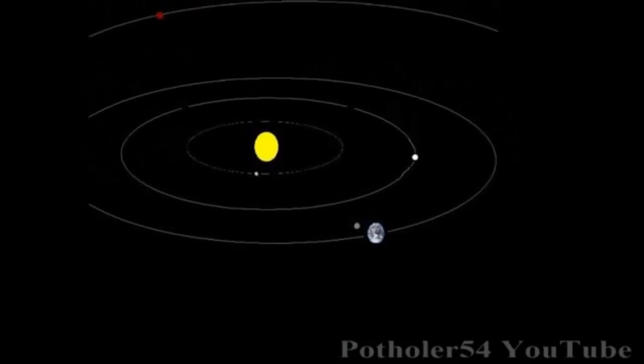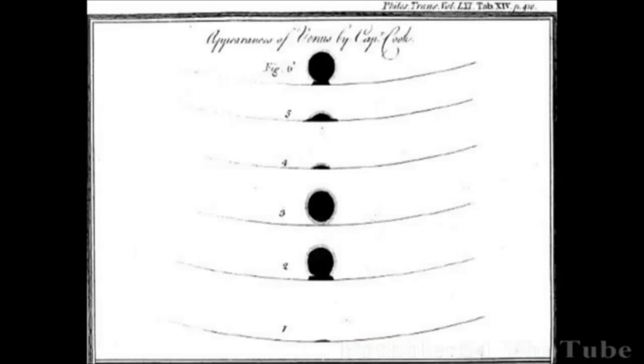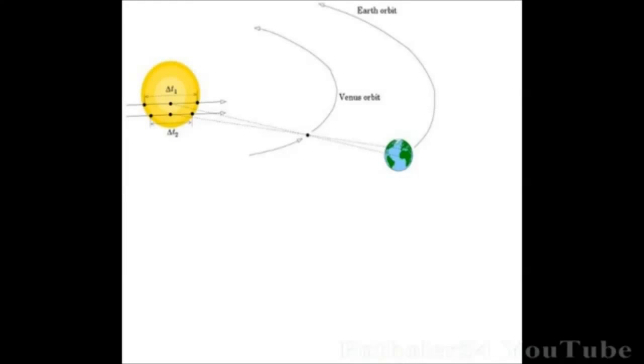In the 18th century, a transit of Venus across the Sun, timed at opposite ends of the Earth, made it possible to calculate the exact distance of the Sun, and by extension the distances of all the known planets.